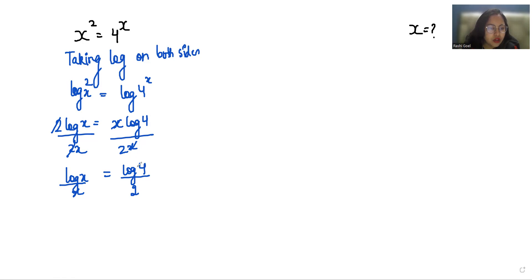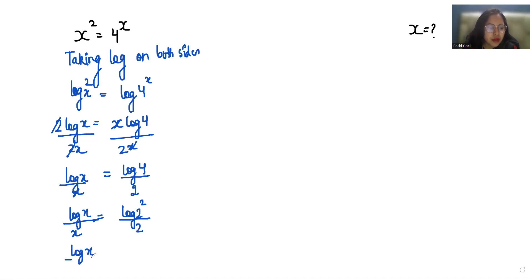Now this log 4 over 2, we can write it as log 2 squared over 2, so this becomes log x over x equals 2 log 2 over 2, which simplifies to log x over x equals log 2.